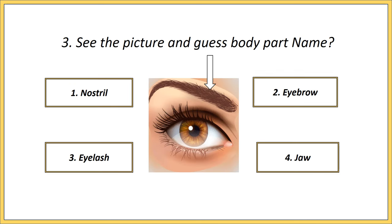Third one. See the picture and guess the body part name. Options: nostril, eyebrow, eyelash, jaw. Answer is eyebrow.